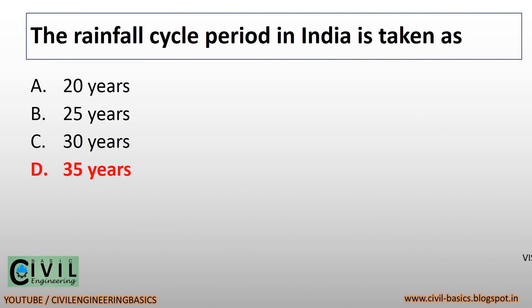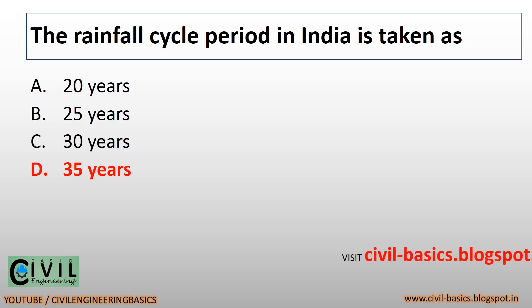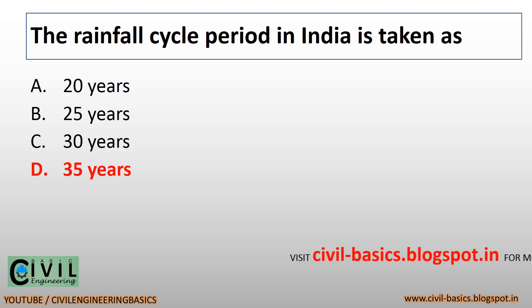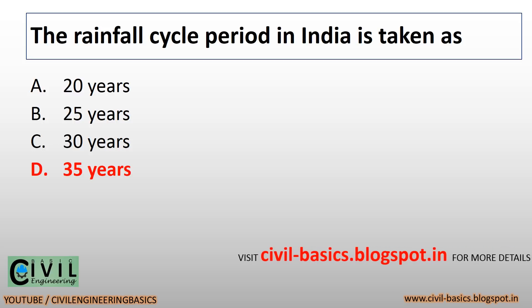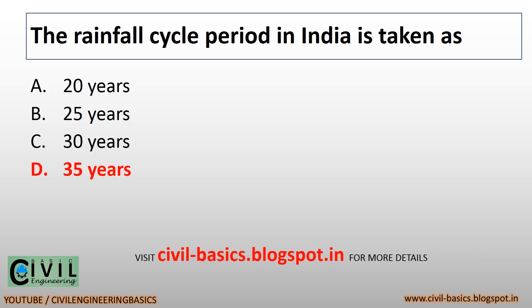The rainfall cycle period in India is taken as 35 years.